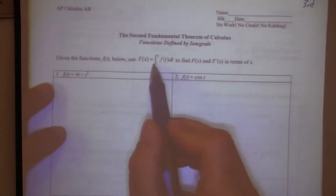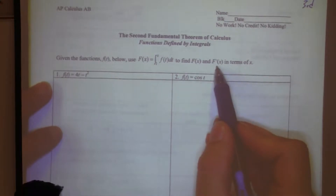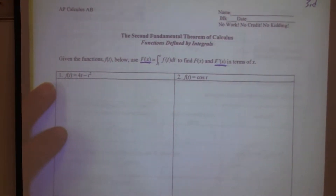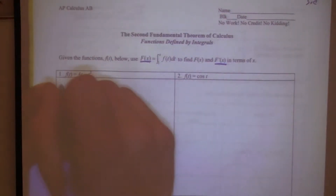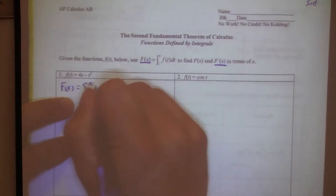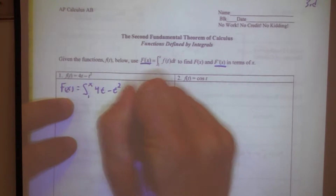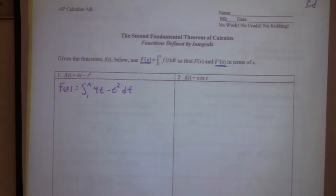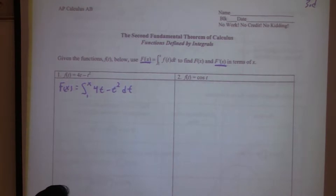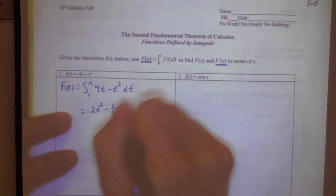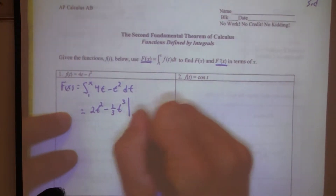We're going to discover the Second Fundamental Theorem by actually computing the integral and then taking the derivative of it. They're calling this integral capital F of x. So let's set up the integral: it goes from 1 to x of the function 4t minus t squared dt. We'll first find the antiderivative and then evaluate it from 1 to x. The antiderivative is 2t squared minus one-third t cubed, evaluated from 1 to x.